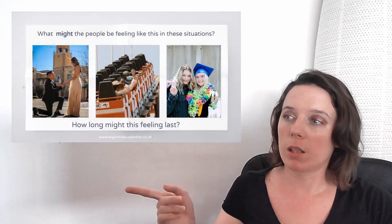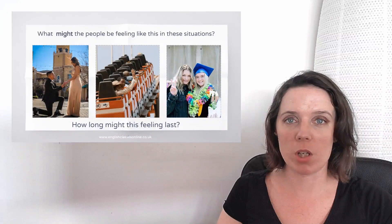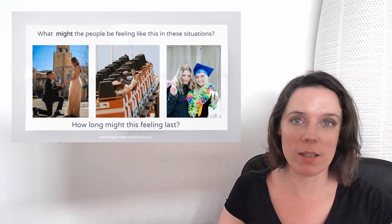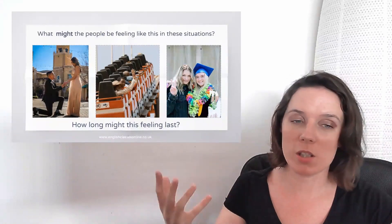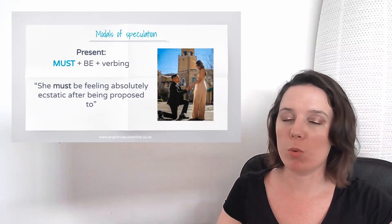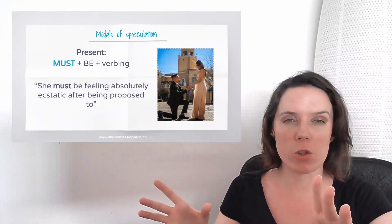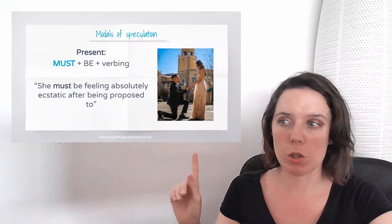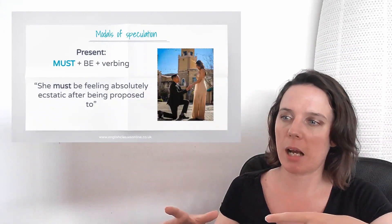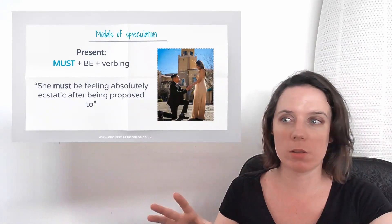So if we take a look at the next task here, what might the people be feeling like in these situations? Again, you've been asked with might. How long might this feeling last? So again, you need to speculate. So for example, using the present, you can now use must be. So if you are absolutely sure, 100% sure about a situation, you can use must be and a verb an ing. So she must be feeling absolutely ecstatic after being proposed to. You're absolutely sure.